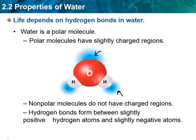Hydrogen bonds form between slightly positive hydrogen atoms and slightly negative atoms. So another water molecule would come in, and the hydrogen end would connect there — that would be a hydrogen bond. Anything that has a negative or positive end would have that possibility. This leads to one of the unique characteristics of water in that it can dissolve lots of things: if it comes across anything else that is polar, it will make these bonds and help dissolve that molecule or compound.